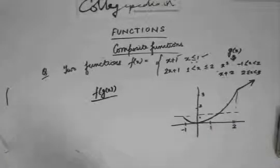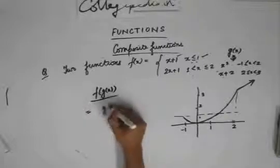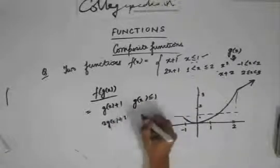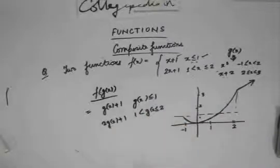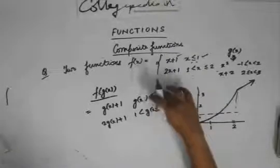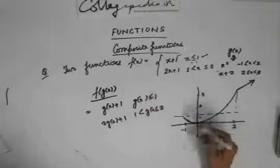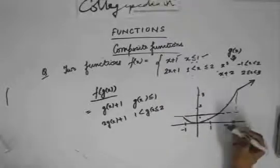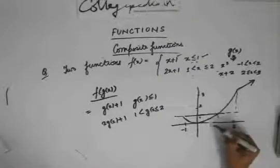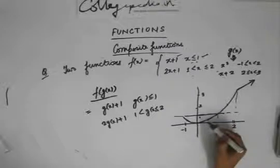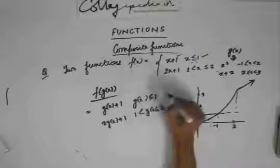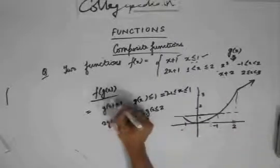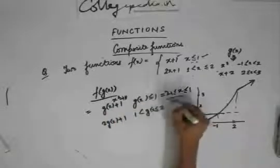I'm asked to find f(g(x)). It equals g(x) + 1 when g(x) is less than or equal to 1, and 2g(x) + 1 when g(x) lies between 1 and 2. We need to eliminate g(x) and write everything in terms of x. From the graph, g(x) ≤ 1 in the interval from -1 to 1. So we replace g(x) with x², giving x² + 1 when x lies between -1 to 1.